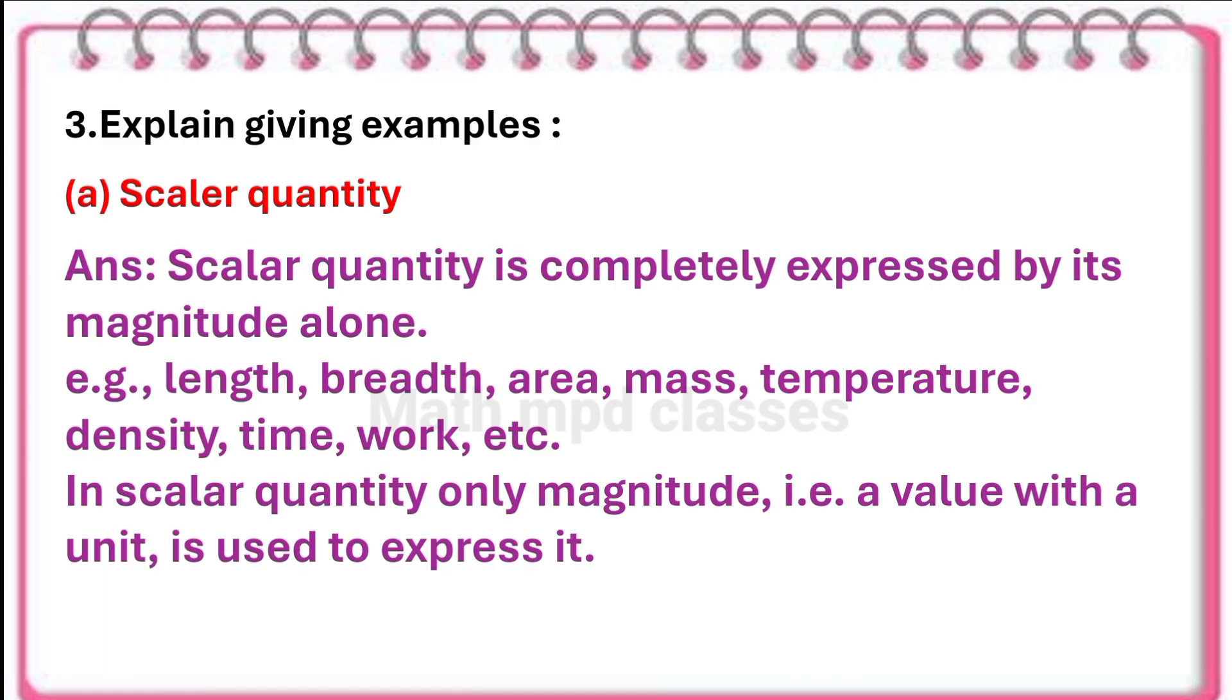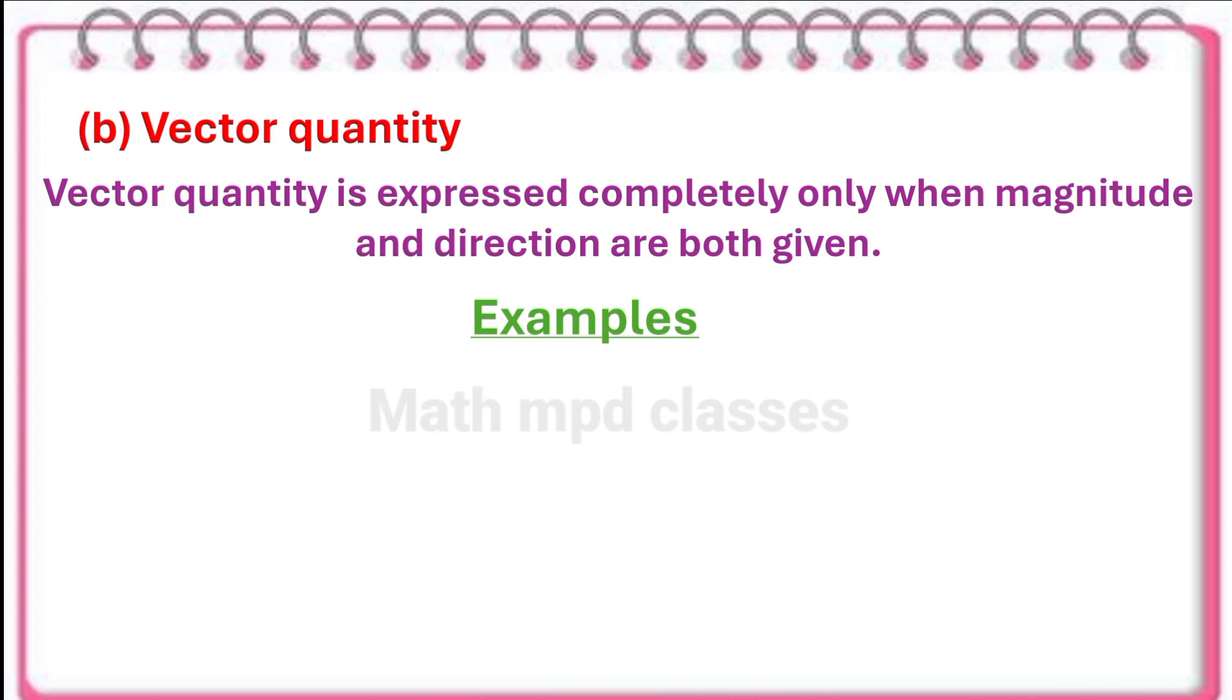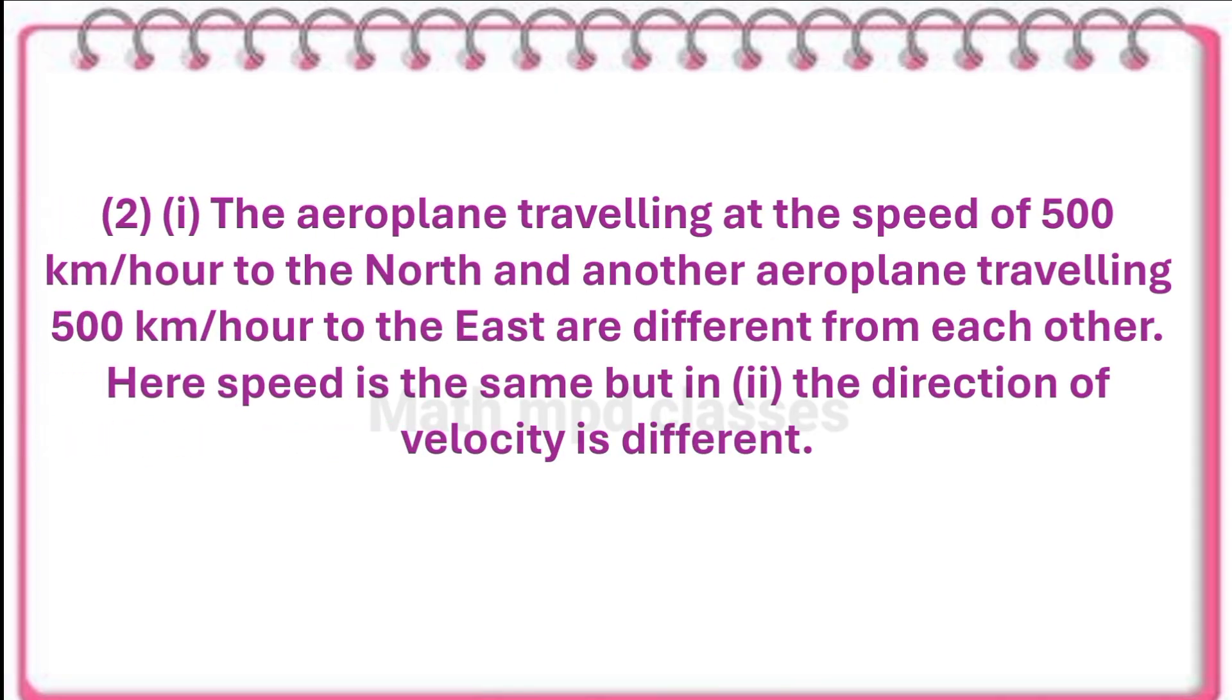In scalar quantity, only magnitude, that is a value with a unit, is used to express it. Vector quantity is expressed completely only when magnitude and directions are both given. Examples: the displacement of 20 kilometers to the north and displacement of 20 kilometers to the east is different from each other.